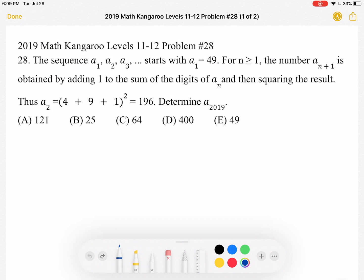Thus, A2 equals the quantity 4 plus 9 plus 1 squared, which is 196. Determine A2019.